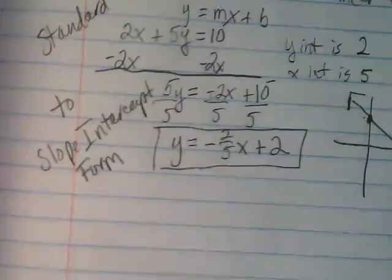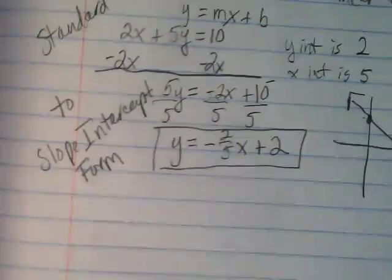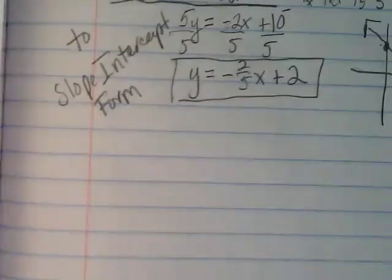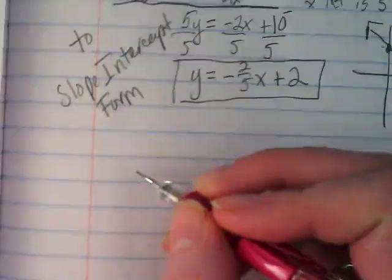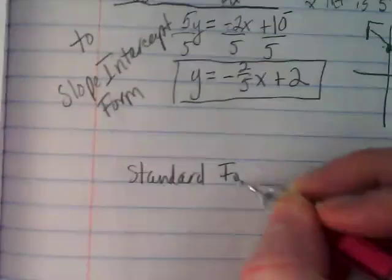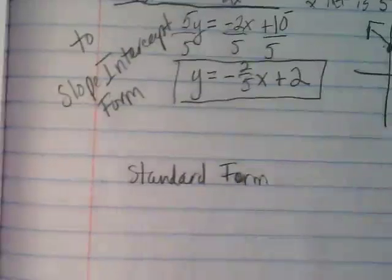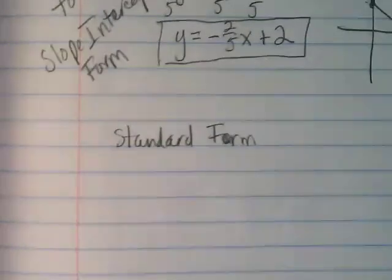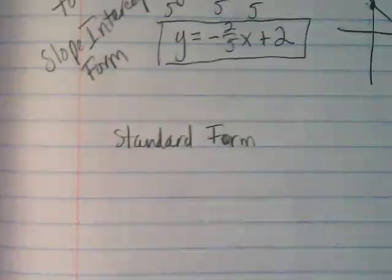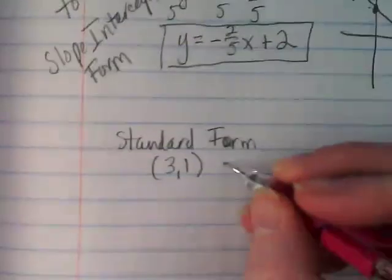What questions do you have before I go on? Okay. And now I want us to write standard form when we're given a point and a slope. So if you're given 3,1 and the slope is 2.